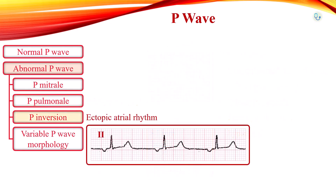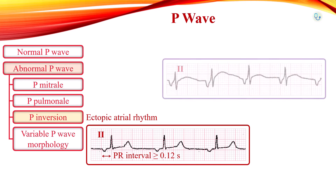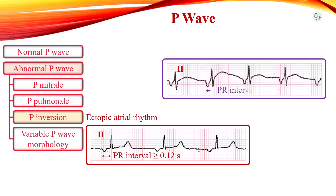P wave inversion in lead 2 indicates non-sinus origin. When inverted P waves are observed, check the PR interval. Inverted P waves with PR interval more than 120 ms is a feature of ectopic atrial rhythm. If PR interval is less than 120 ms — that is a shortened PR interval — the origin is in the AV junction, for example, accelerated junctional rhythm.